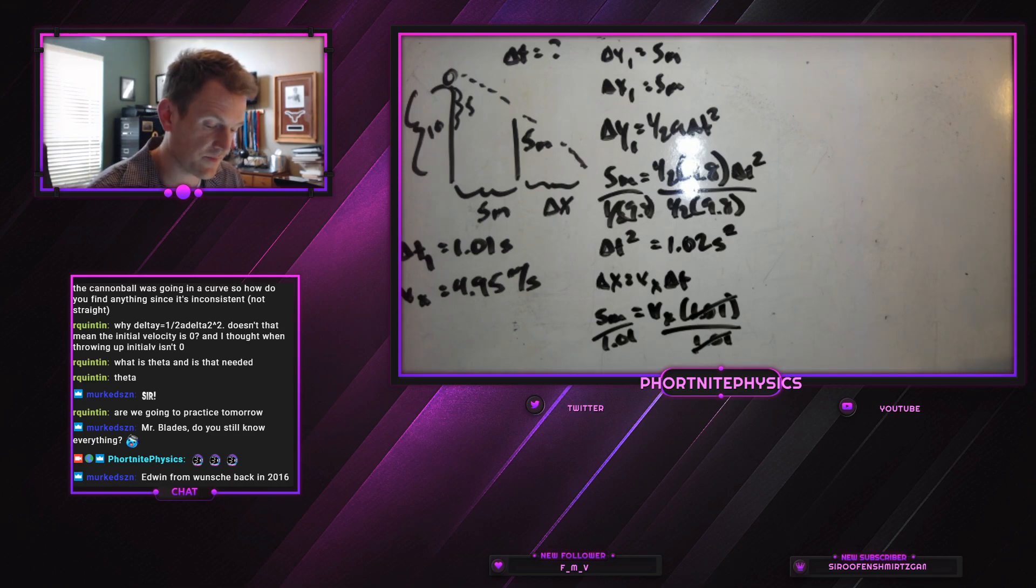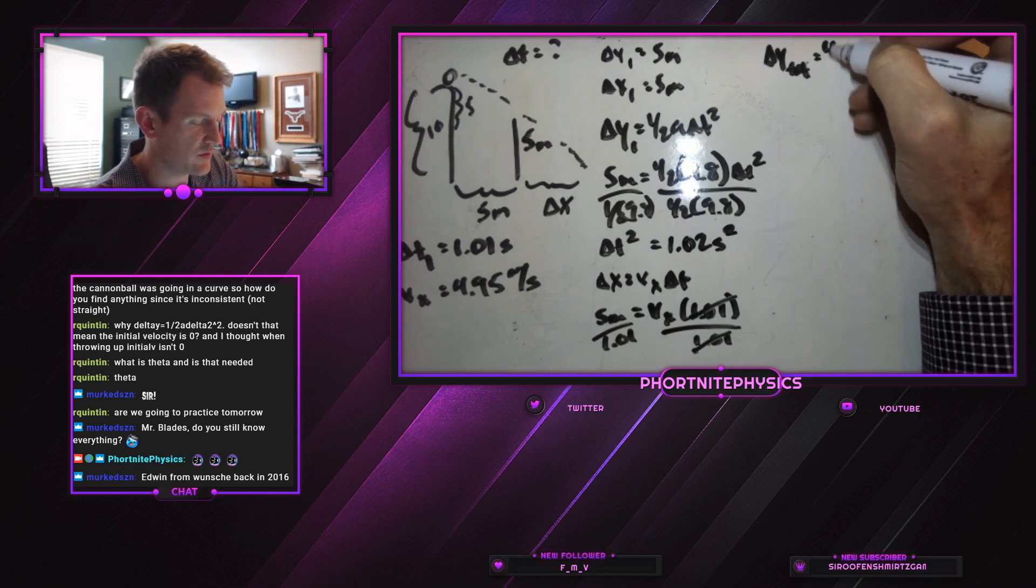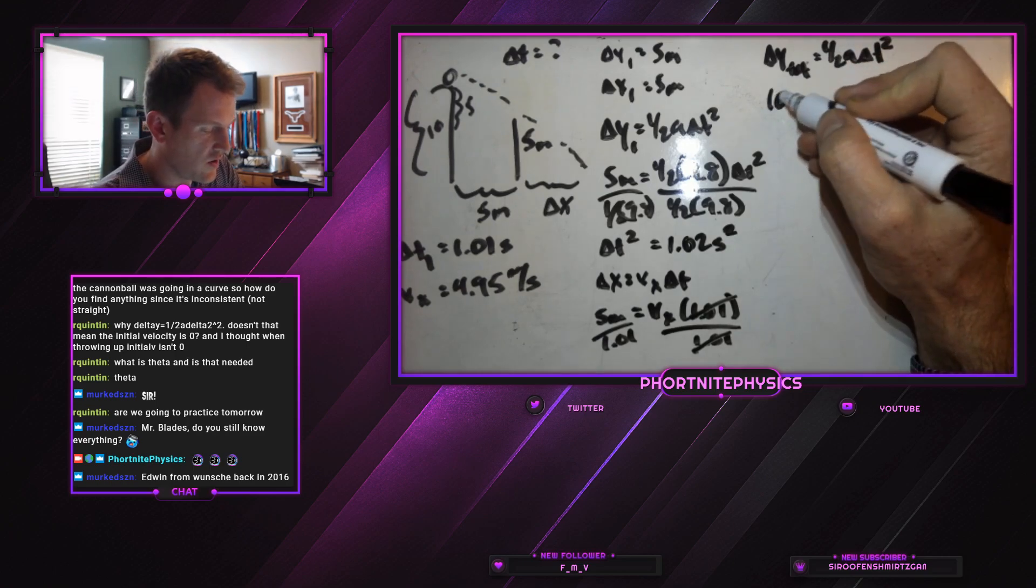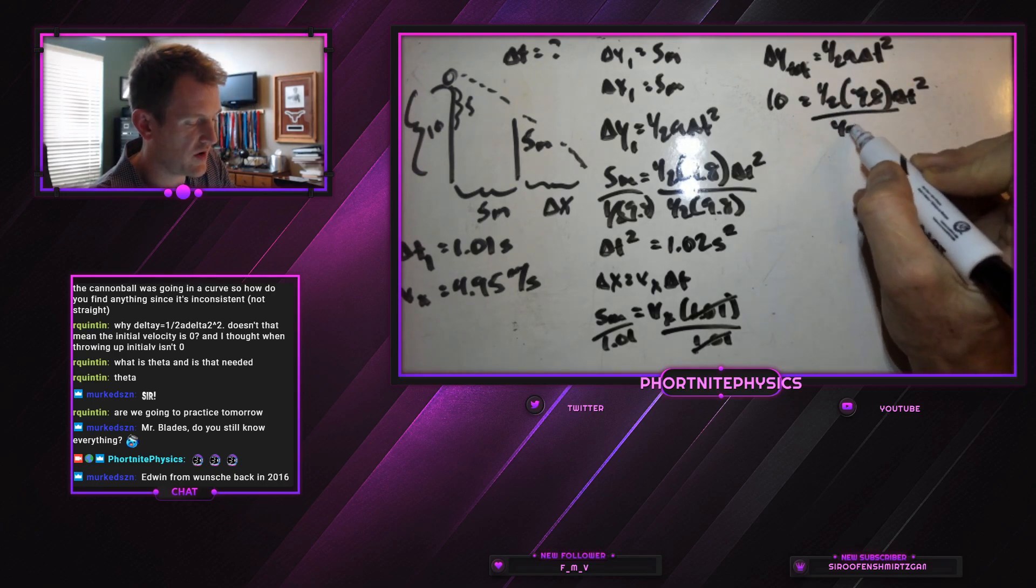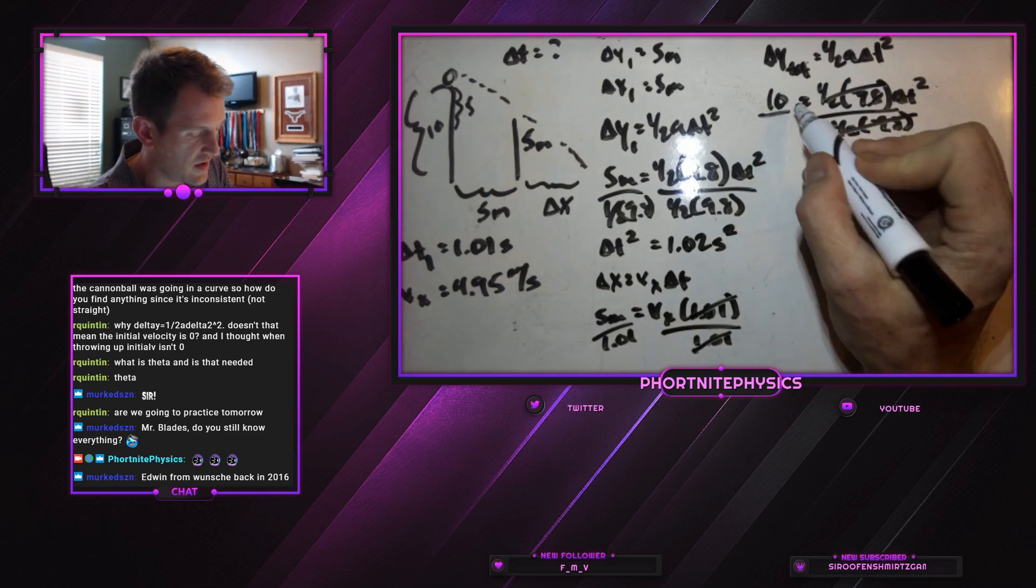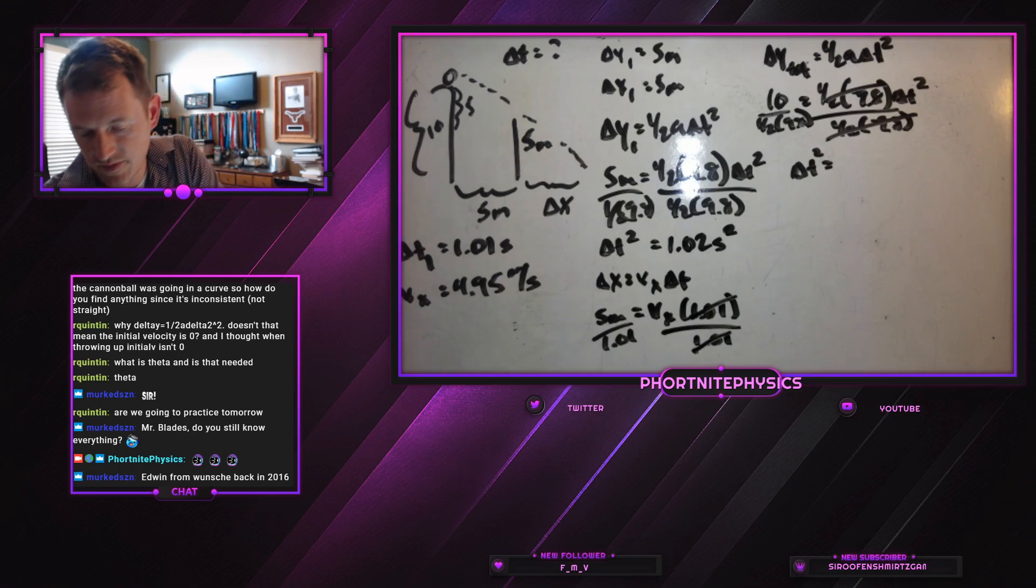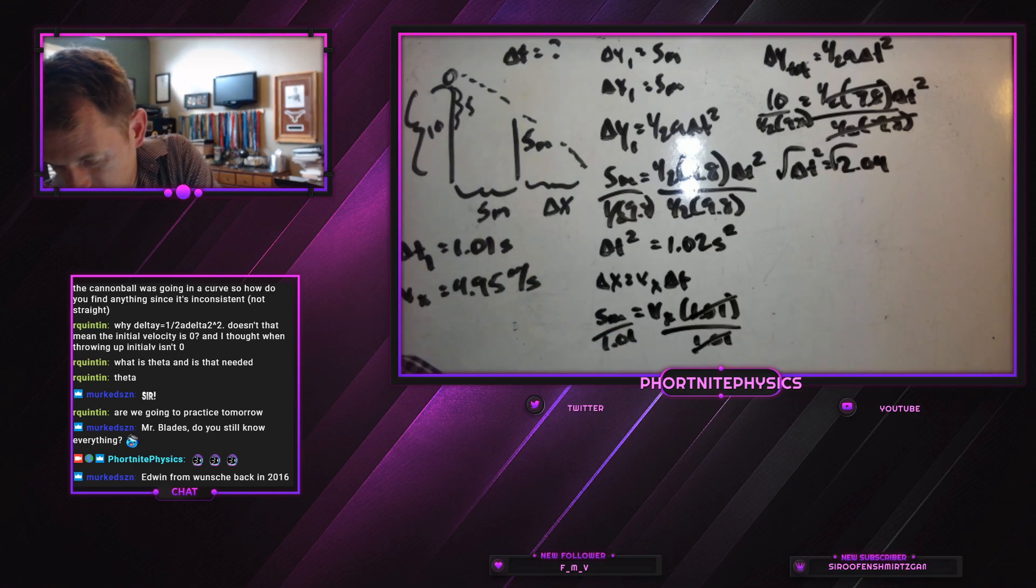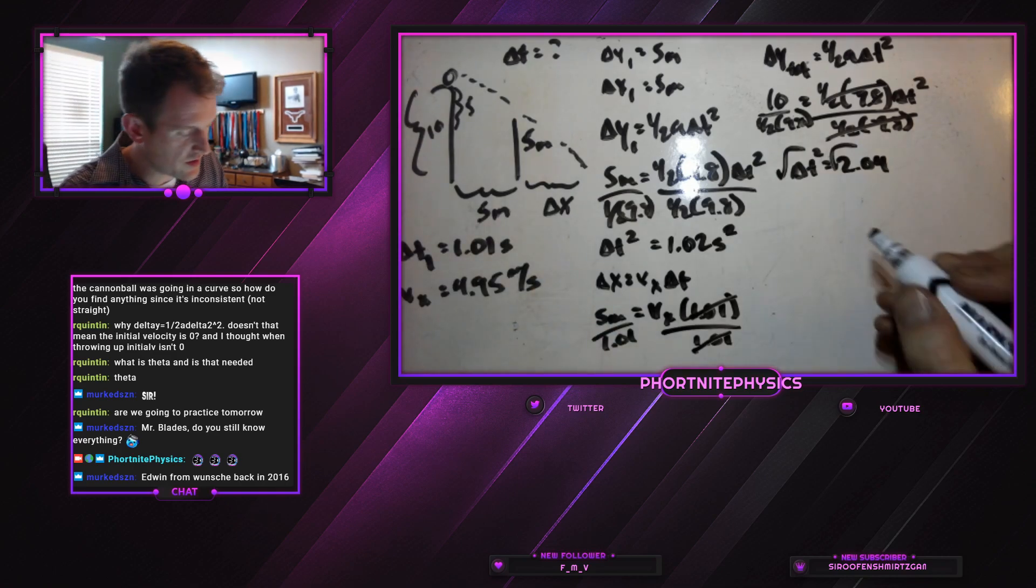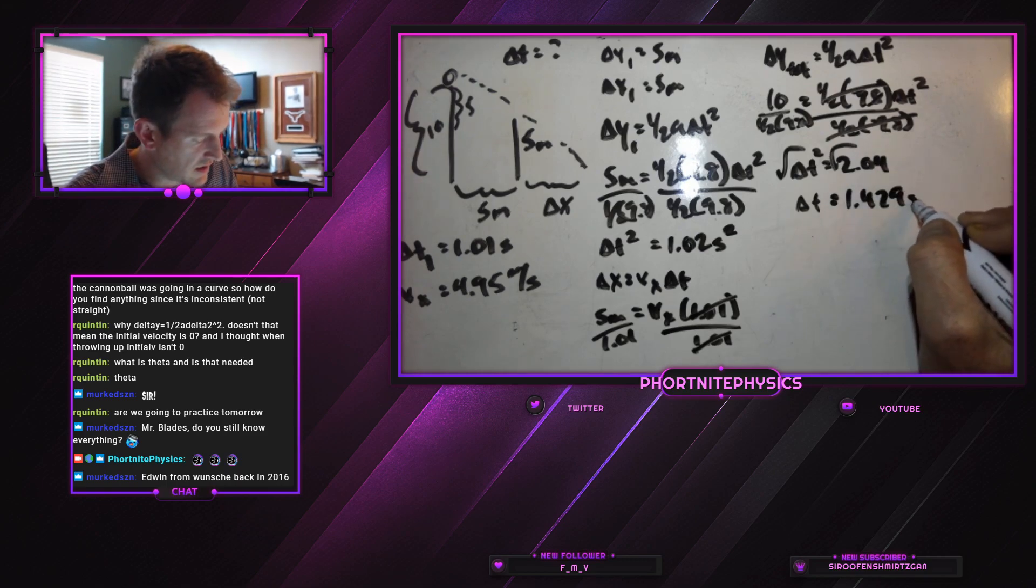But we need to know how long it's actually going to be in the air. It's going to fall that 10 meters. So our delta Y total is equal to 1 half A delta T squared. Or 10 meters is equal to 1 half negative 9.8 multiplied by delta T squared. If we divide both sides by negative 4.9, we end up with a delta T squared of 10 divided by 4.9, 2.04. And if we square root both sides, we end up with a delta T of 1.429 seconds.